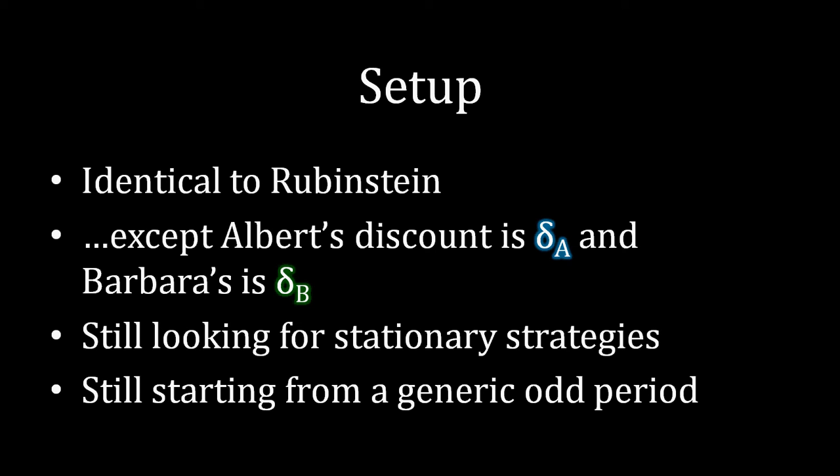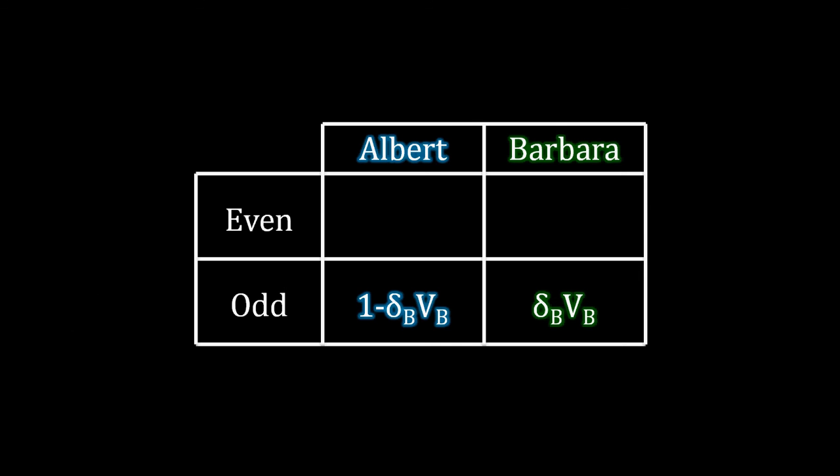We're still using that same trick, and we still have to start by thinking about a continuation value for Barbara. So let's think about a generic odd period: if Barbara rejects in this generic odd period, she receives a continuation value equal to VB — that's how much she expects to receive in the next stage if she rejects here.